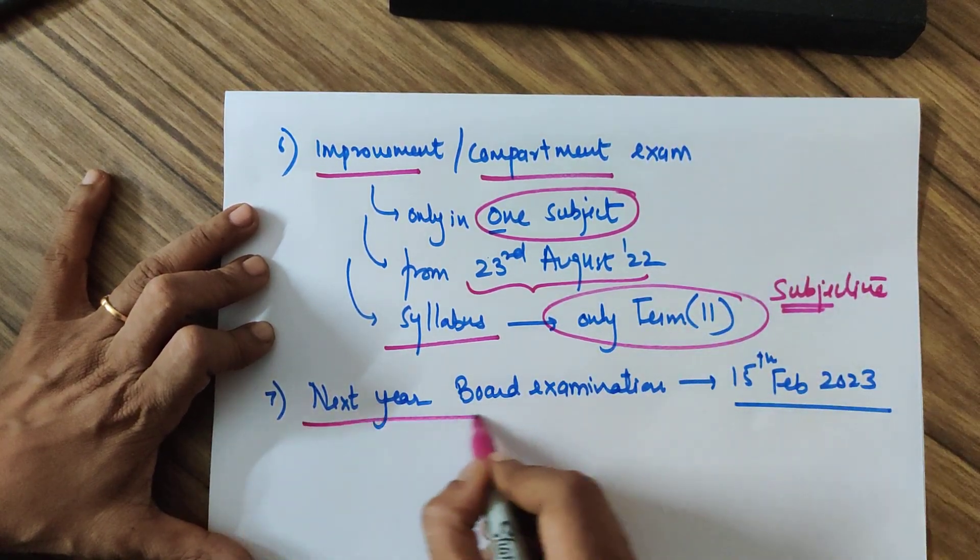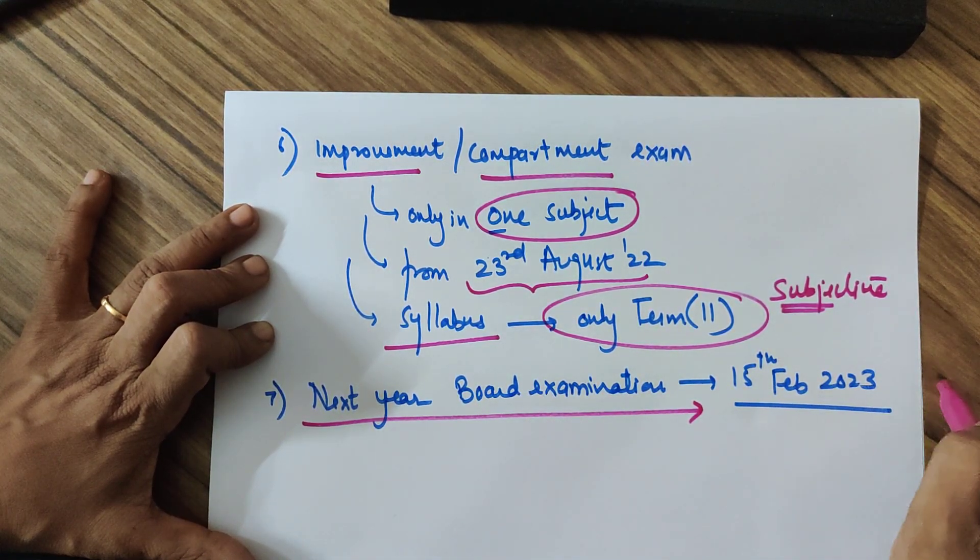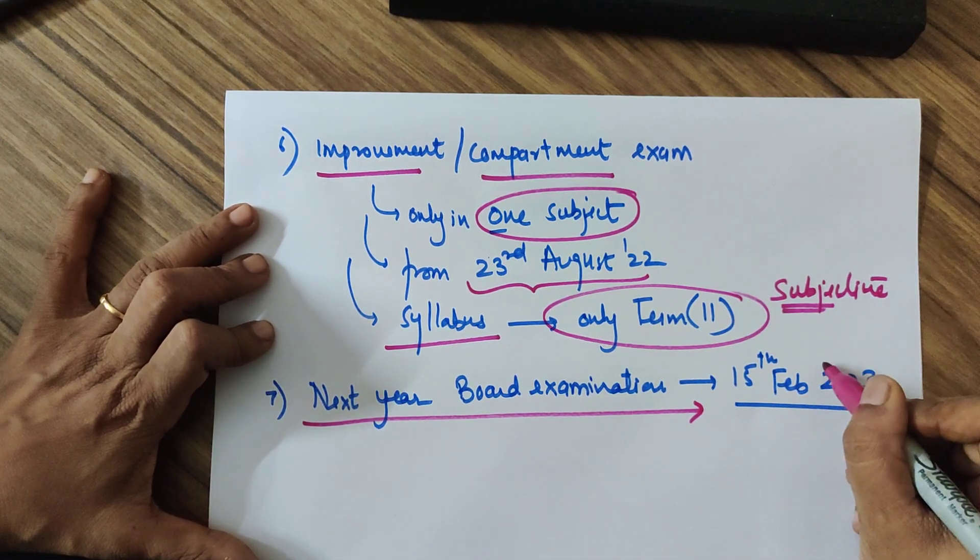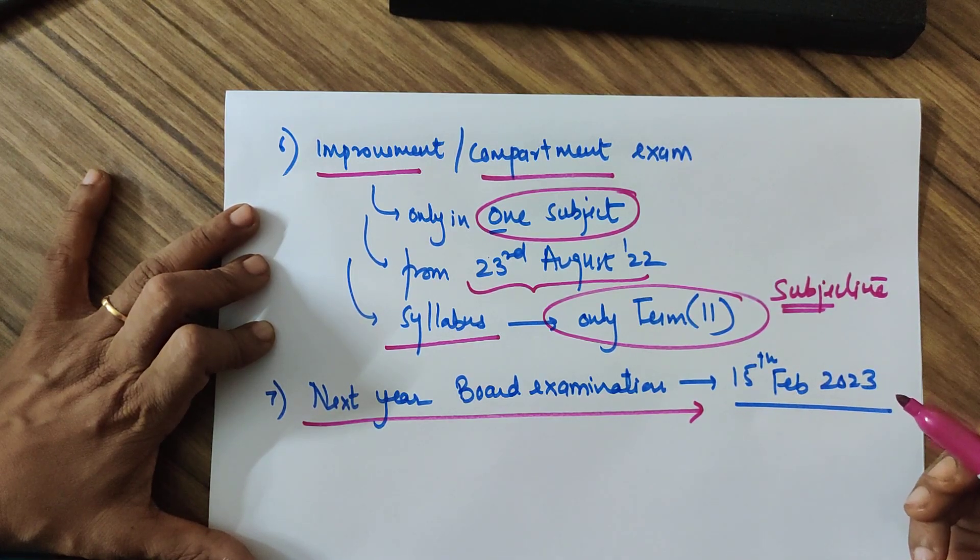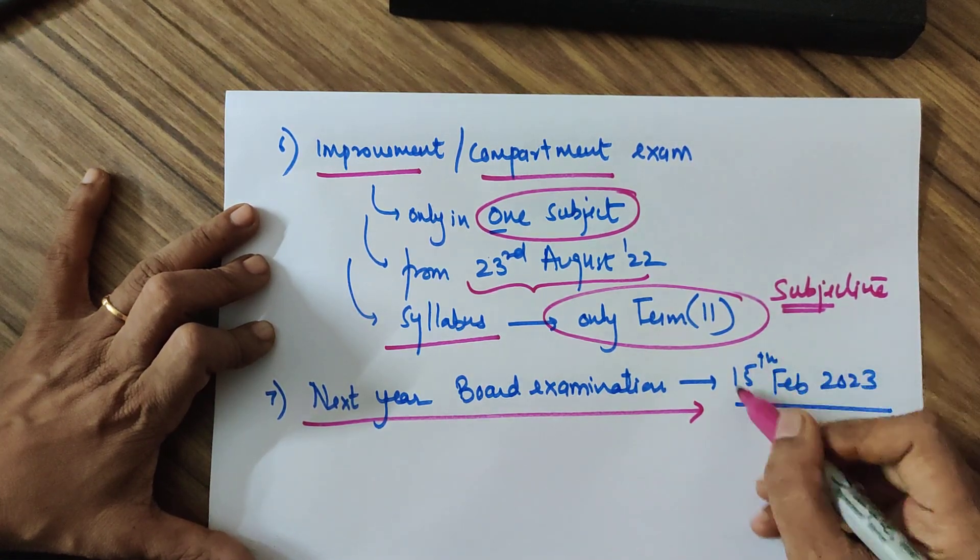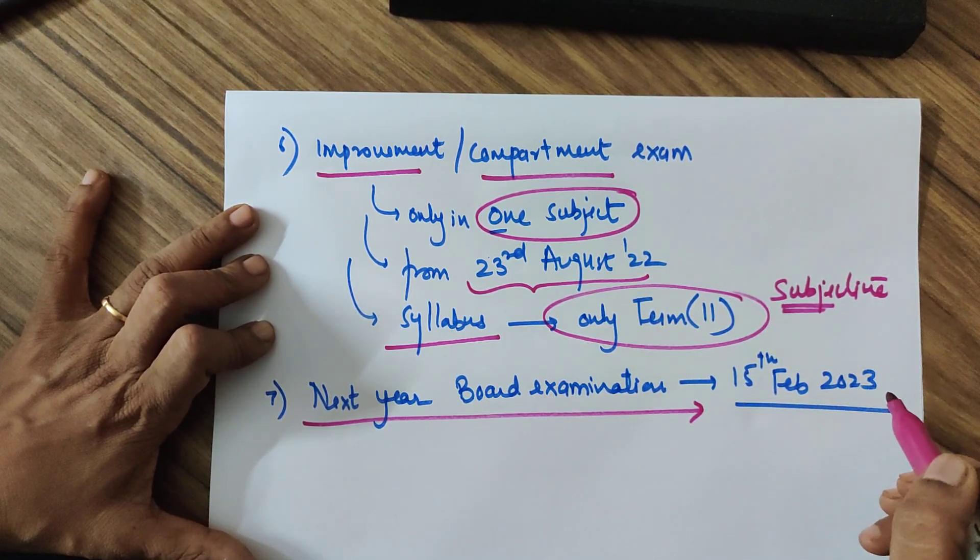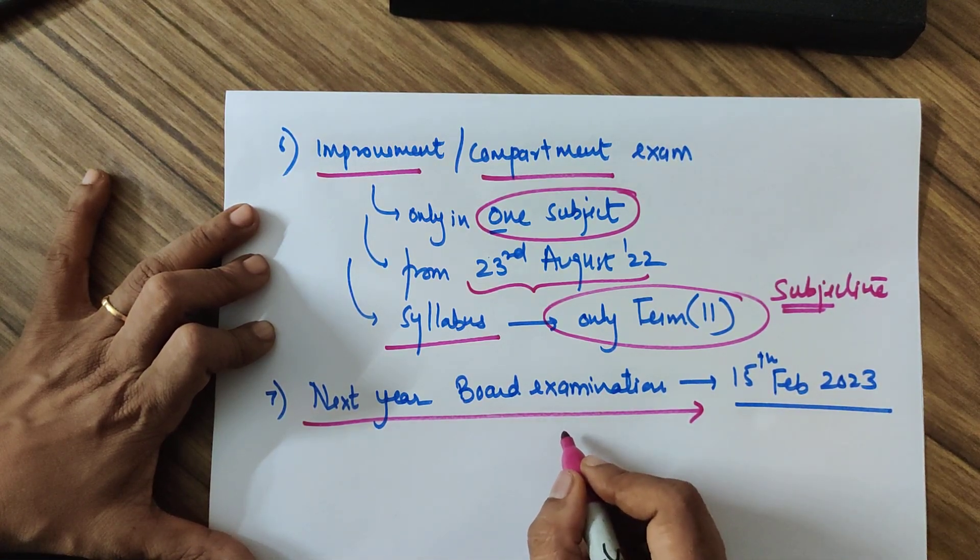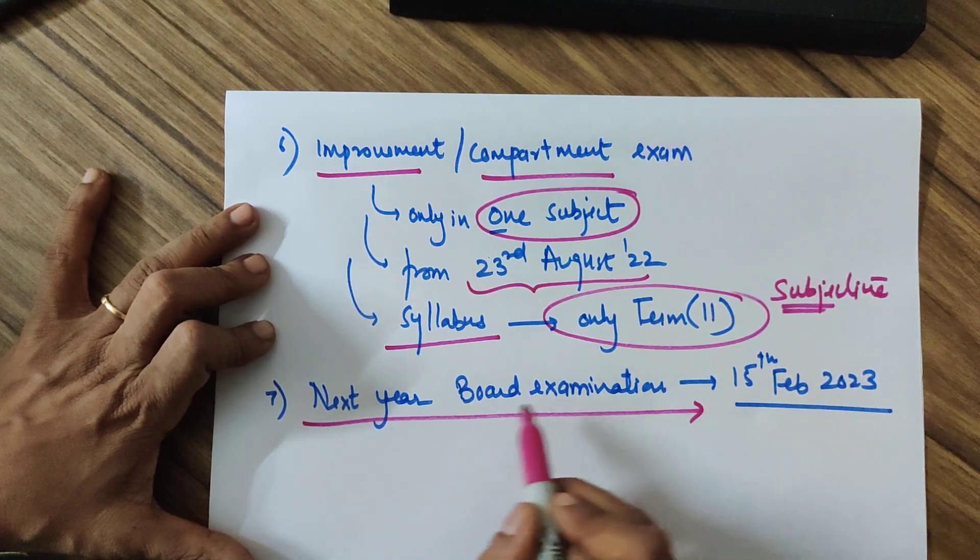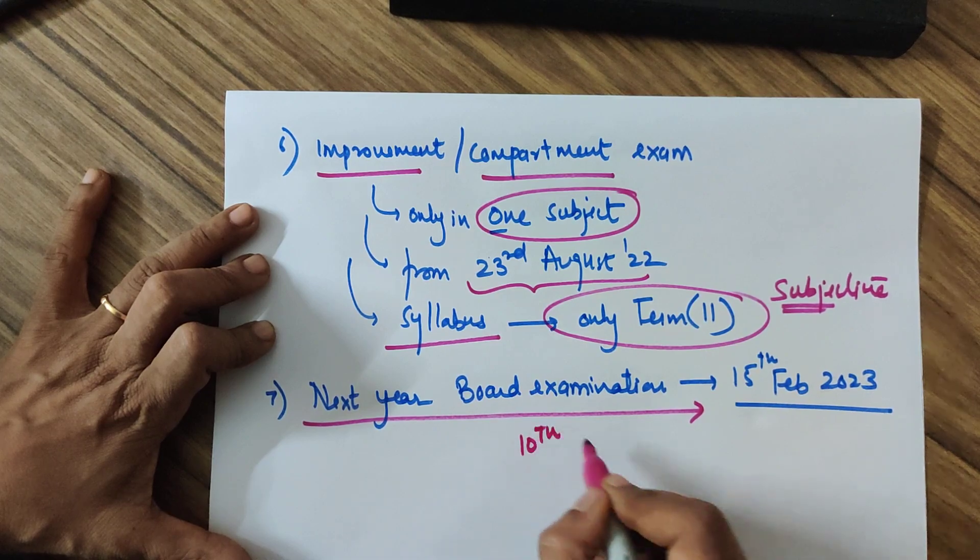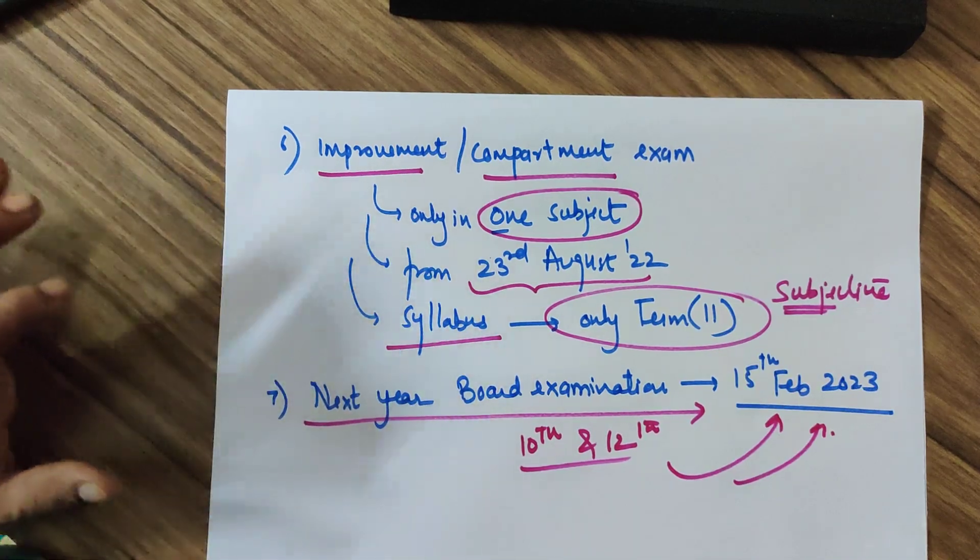Moving to the last, next year ka board examination kab hoga? They will begin from 15th February 2023. Jab 15th February CBSE bolte hain, normally ye wale papers doosre streams ke hain. Main subject papers roughly begin by 1st of March. These are the other languages and art related subjects jinme early start hote hain. So for the new batch of students, please don't wait. Your exam will not be late. We have started from early session. So these students of Class 10th and 12th of next year, your paper is from 15th of February. Please gear up.